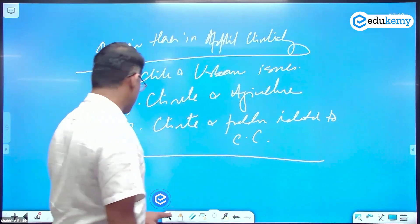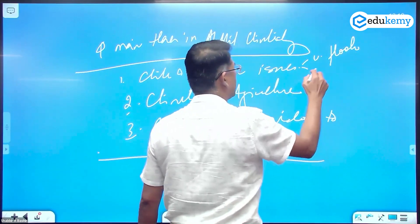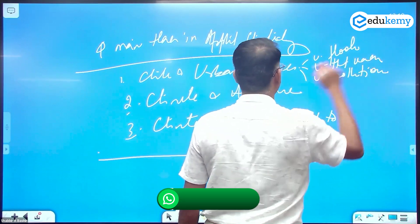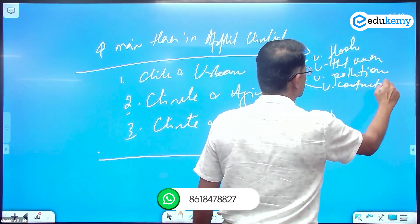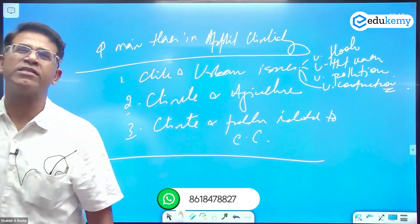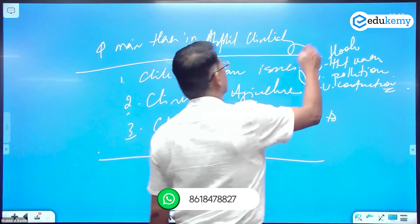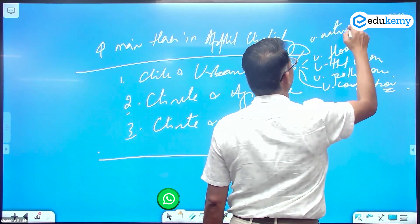When it's urban issues, I'm talking about urban floods, urban heat waves, urban pollution, urban construction - how climate influences it. Climate and floods, climate and heat waves, climate and urban pollution, climate and construction. You can also add climate and urban water issues.